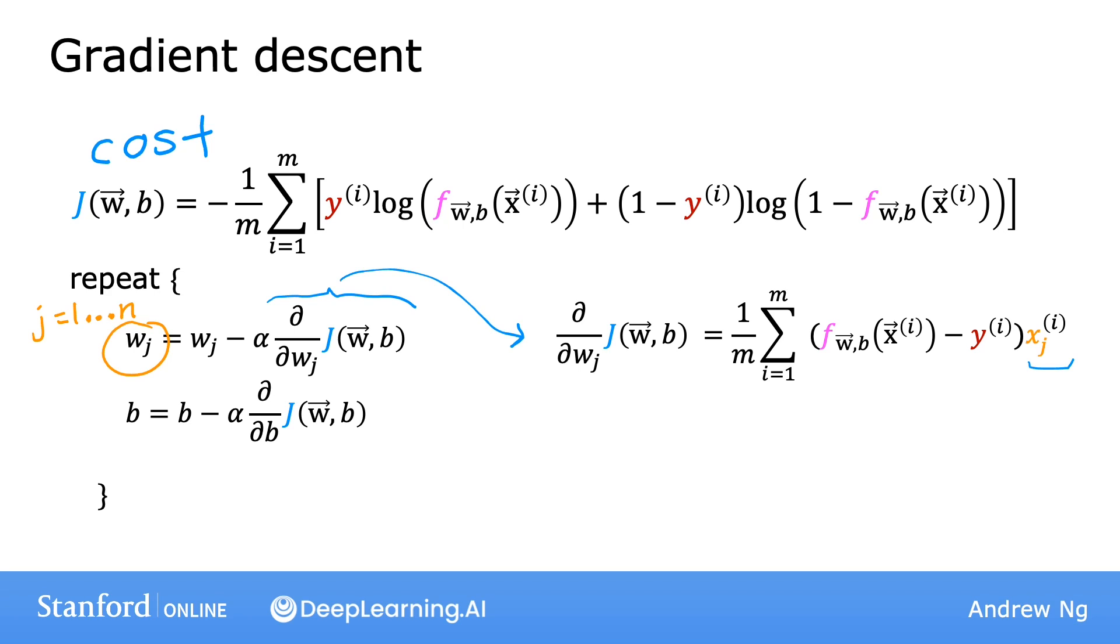Now, let's also look at the derivative of j with respect to the parameter b. It turns out to be this expression over here, and it's quite similar to the expression above, except that it is not multiplied by this x superscript i subscript j at the end.